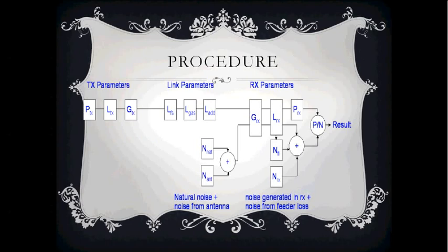Regarding the procedure of link budget: link budgets usually start with the transmitter power and the sum of all the gains and losses in the system, accounting for the propagation losses to find the received power. Then the noise level at the receiver is estimated, so we can take the ratio of signal power to noise power and work out the performance of the link.